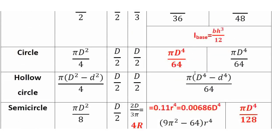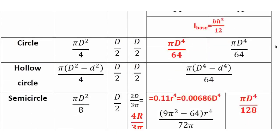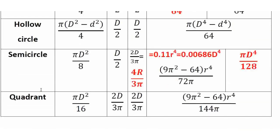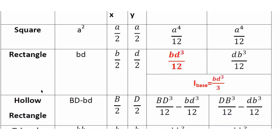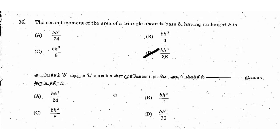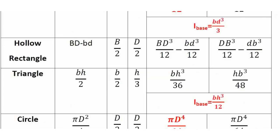For a triangle with base b and height h, the second moment of area about the base is bh³/12, and about the centroidal axis is bh³/36. The question asks about the base, so bh³/12 is the correct answer.